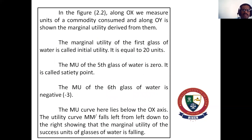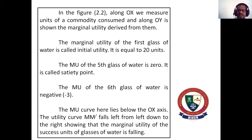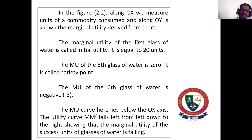In the figure, along the Y-axis is measured the utility of the commodity consumed, and along OX is shown the marginal utility. The marginal utility of the first glass of water is called initial utility — the first time he is going to take it. He wants to take it because he is thirsty, and it is equal to 20 units. The marginal utility of the fifth glass of water is zero — this is called the saturation point or breakeven point. The marginal utility of the sixth glass of water is negative in nature. The marginal utility curve MM falls from left to right, below the OX axis.